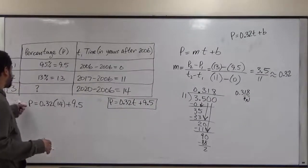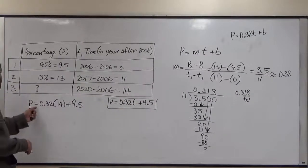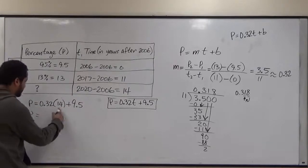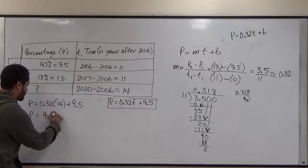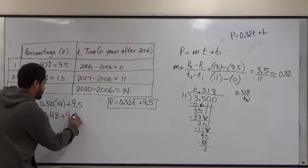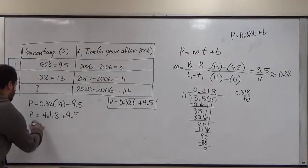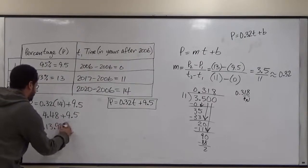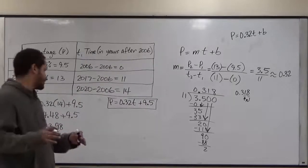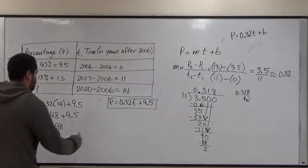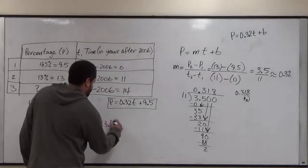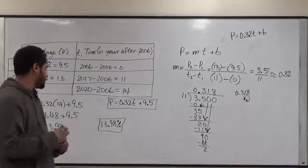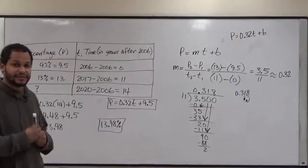Here what we're doing is we're multiplying to calculate the percentage. So we have 0.32 times 14 plus 9.5, and we're going to get p equals, with the calculator we will calculate 4.48 plus 9.5. And these two, when we add them up, we get 13.98. And this again, remember, it represents a percentage. So this is going to be 13.98%. And this should be the rate of the Asian international students at BMCC in 2020.